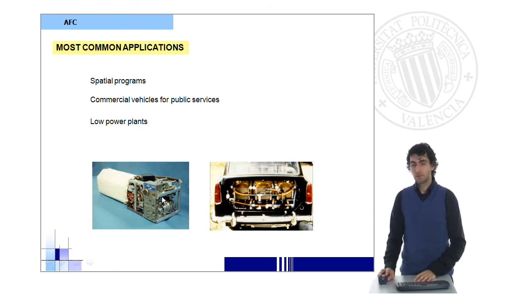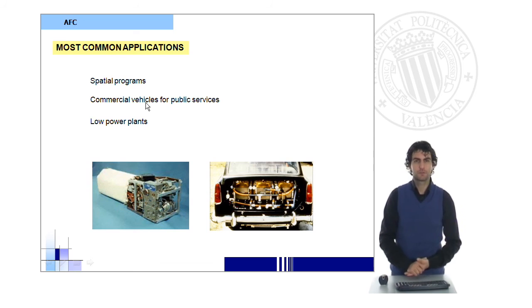These are some examples of alkaline fuel cells which have been already used. This is the one that was used by NASA in one of the programs. It's been also used in commercial vehicles for mobile or public services and in low power generation plants.